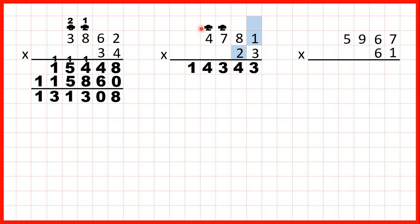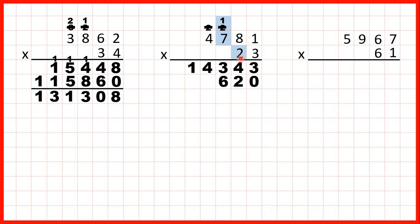Now we can cross out our working and write a 0 as the last digit of our second answer line, because we're going to multiply by this 2 that's in our tens. We could also cross out the 3 because we've already multiplied by 3 on our first answer line. 1 times 2 is 2. 8 times 2 is 16, so that's 1 6, with the first digit above the next digit we're going to multiply. 7 times 2 is 14 plus 1 is 15, so that's 1 5. And 4 times 2 is 8 plus 1 is 9.